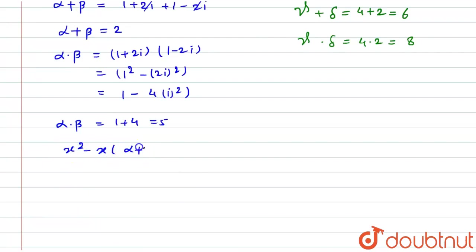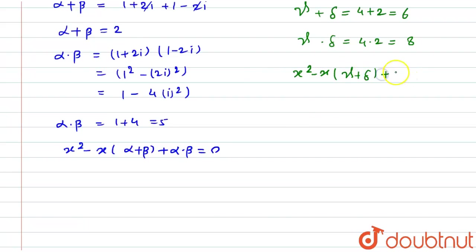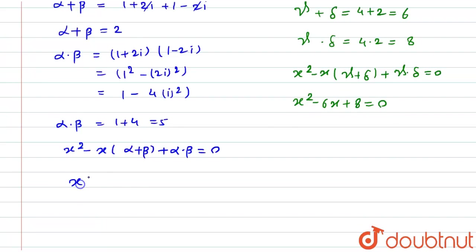Now we can form two quadratic equations. For the first pair: x squared minus (alpha plus beta)x plus alpha times beta equals 0, which gives x squared minus 2x plus 5 equals 0. For the second pair: x squared minus (gamma plus delta)x plus gamma times delta equals 0, giving x squared minus 6x plus 8 equals 0.